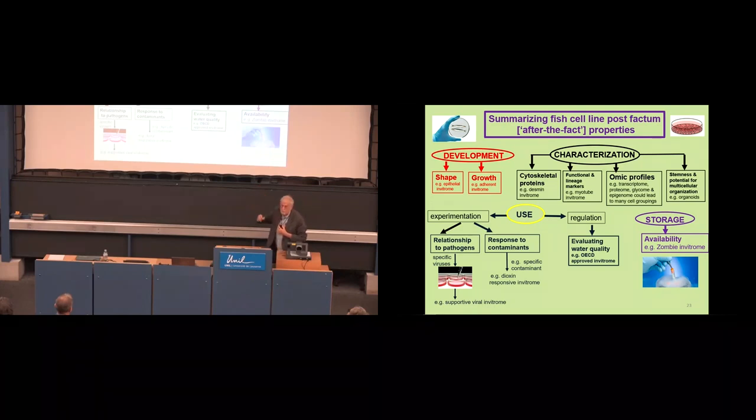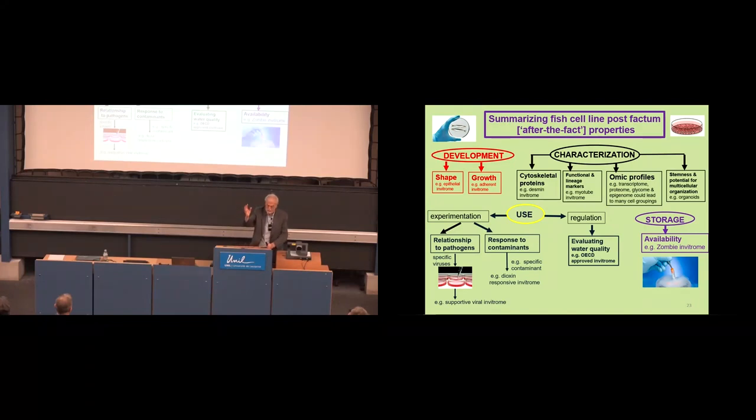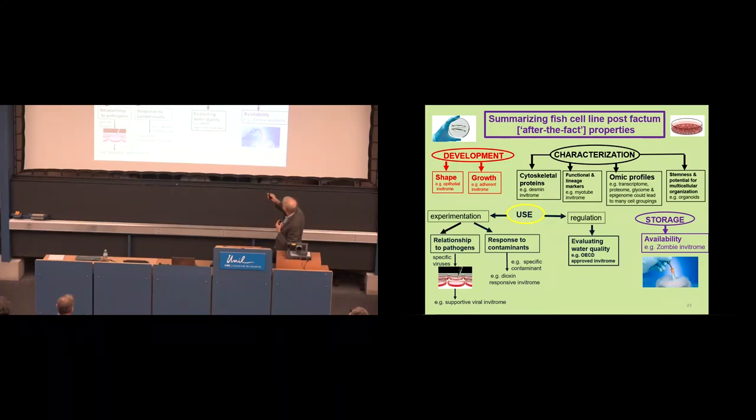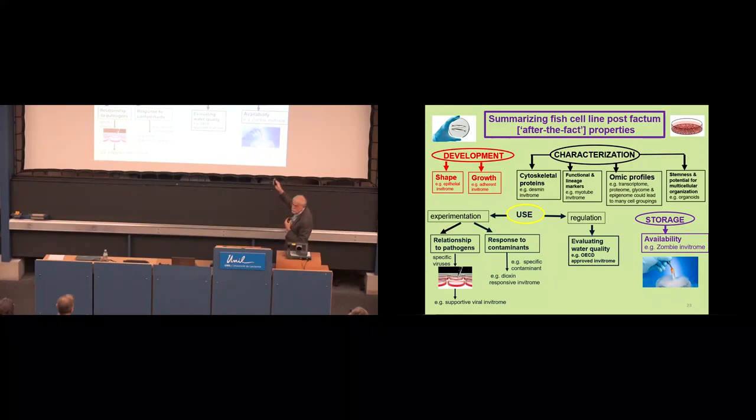So I've summarized this in this slide. And I just want to say, so for development, two obvious criteria is what is the shape of the cell line? And how does the cell line grow? Does it require a solid substrate? Can it grow in suspension or does it grow in some matrix? So those are things that you notice early in your development of the cell line. And then the characterization, say in fish, is rather poor for the most part. So we do things like cytoskeletal proteins. But you could have functional lineage markers. And then of course what is really needed in fish cell lines is all those omic profiles. So transcriptome or epigenome. And then a final characterization is the stemness or potential for multicellular organization. So those are development and characterization, two post-factum properties.